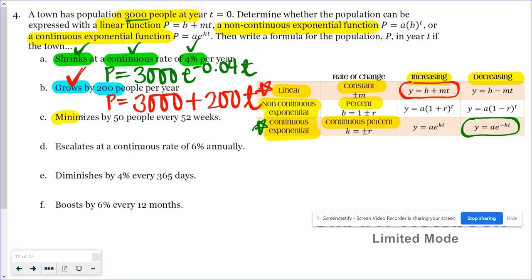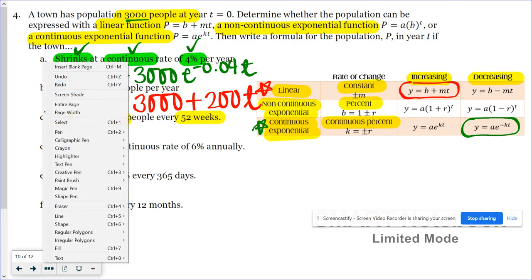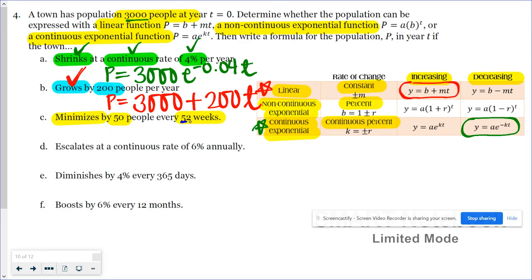Scenario C minimizes by 50 people every 52 weeks. First off, I do not want you to be thrown off by this every 52 weeks, because that is just another way of saying per year. There are 52 weeks in a year, so every 52 weeks, you're talking every year.